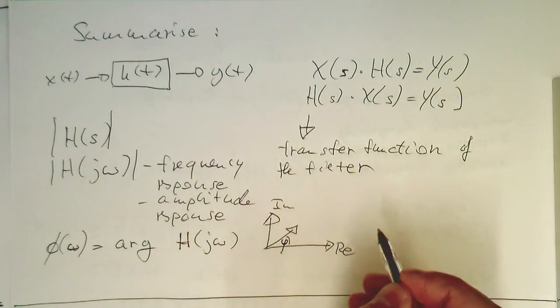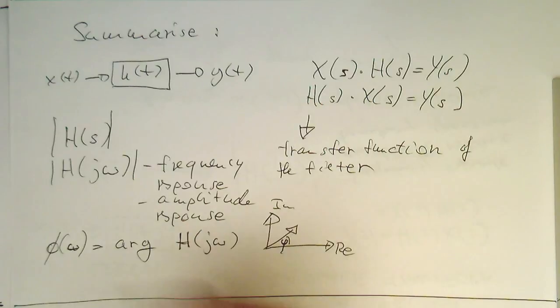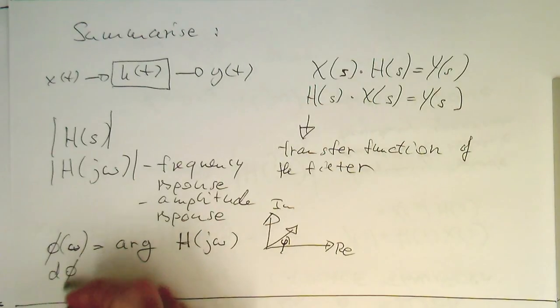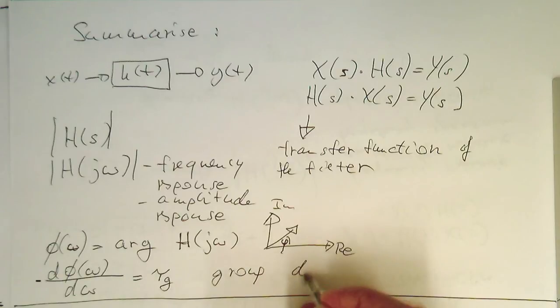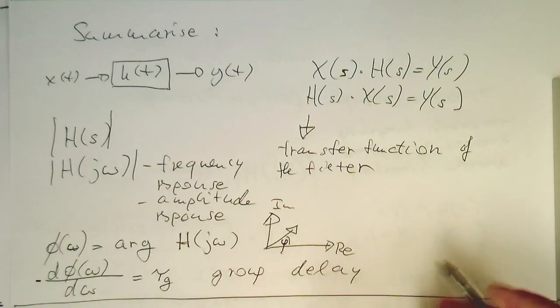And then we can define, out of this, the phi of omega divided by omega. And we can call this here tg, and this is the group delay at frequency omega.